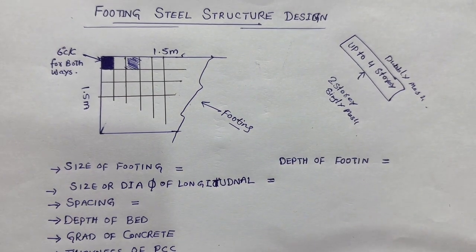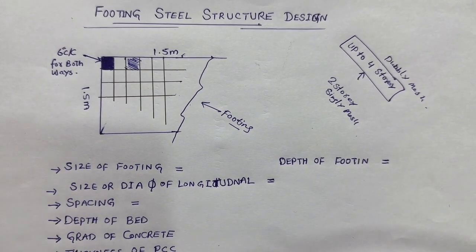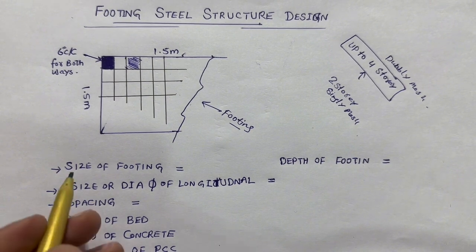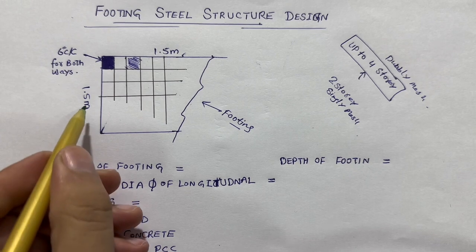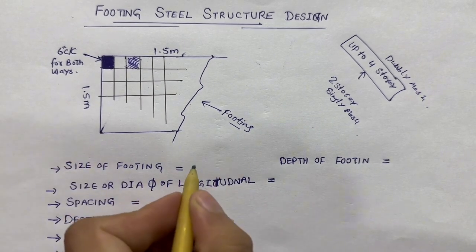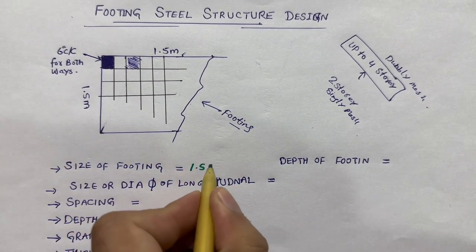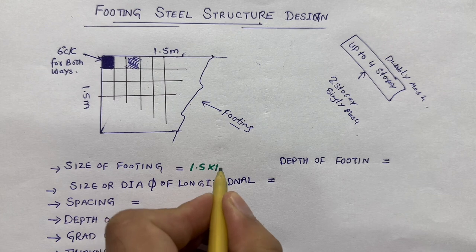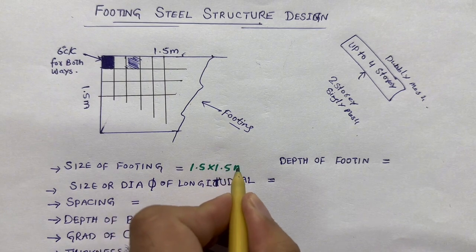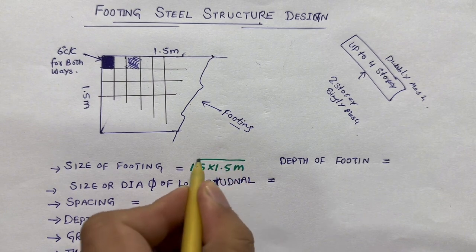Next, what should be the size of the footing? The size of the footing for normal residential building up to 4 storey, as I discussed, is 1.5 meter by 1.5 meter.